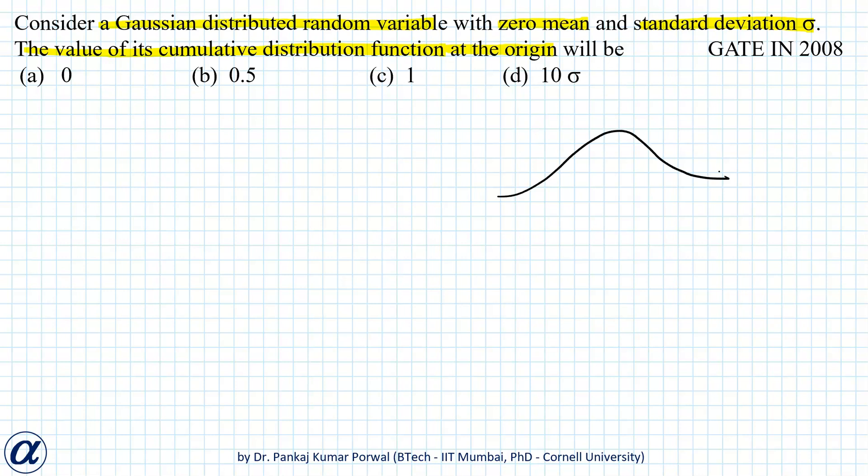We know that the probability density function of a Gaussian is a bell-shaped curve with maximum at the mean, which is zero in this case, and standard deviation σ. This curve is symmetric about the mean.